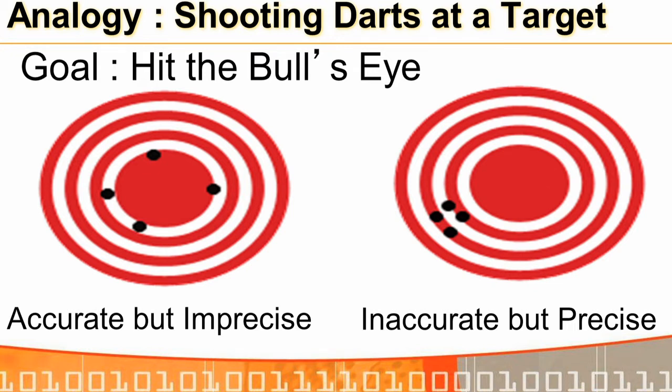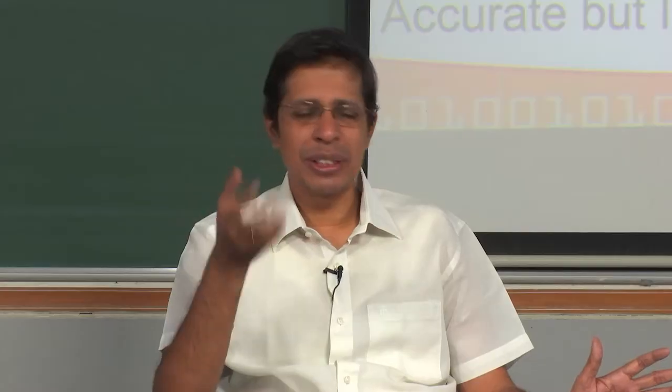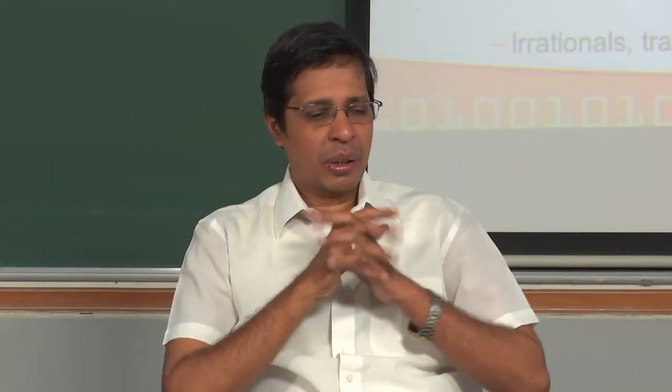I will give several analogies as we proceed so you understand the difference between accuracy and precision. You can write those C programs, compile, and execute to see for yourself how each of these four combinations is possible in floating point arithmetic and what care we need to take.